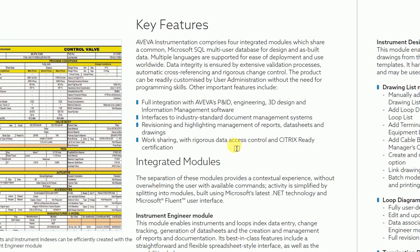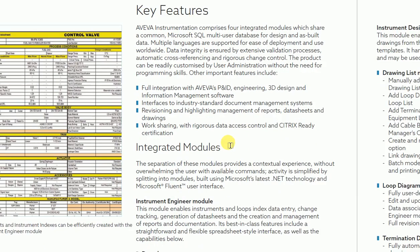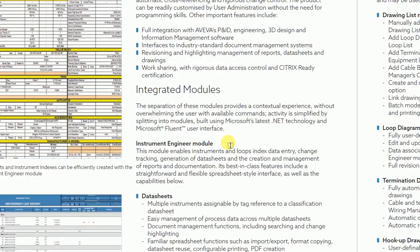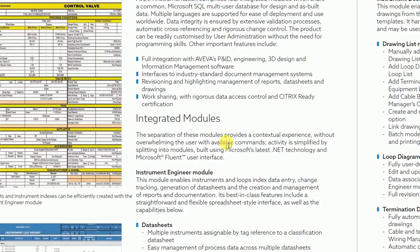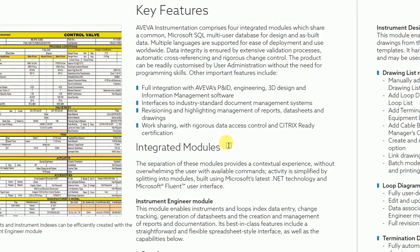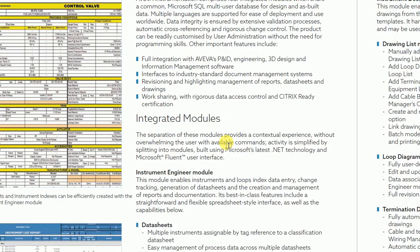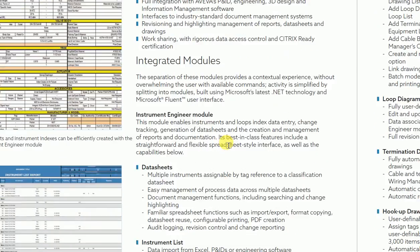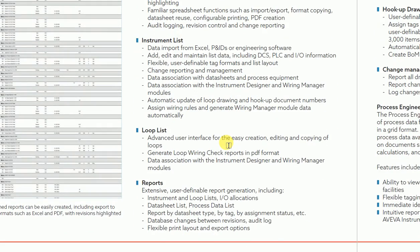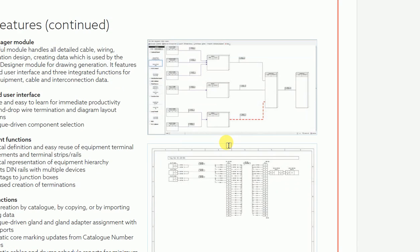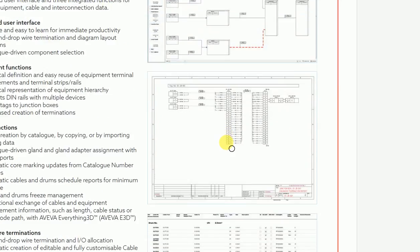Now we will discuss the key features and modules of AVEVA — what things we can do with it. AVEVA has various modules including: datasheet module, instrument list module, instrument index module, instrument design module, drawing list management, loop diagram, termination diagram generation, hookup drawing generation, change management, reports generation, loop list, and wiring manager modules. We will discuss these one by one.